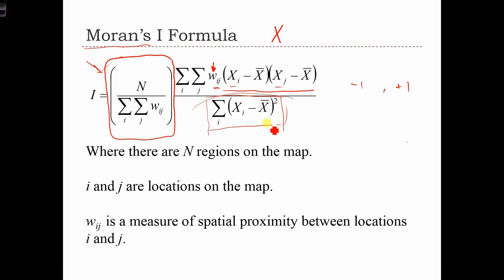By dividing by the total variation in x and by controlling by this term over here, we take the sum of the cross-products and put it into a range between minus 1 and plus 1.